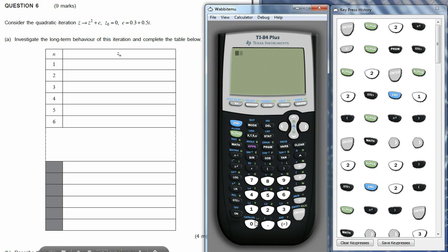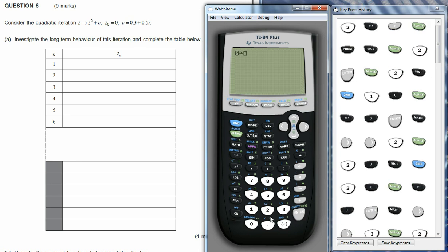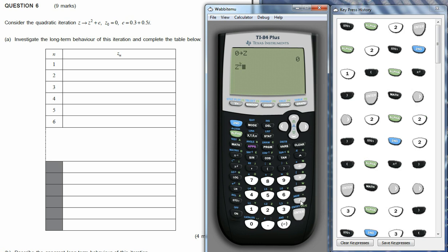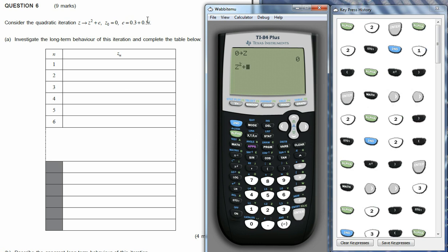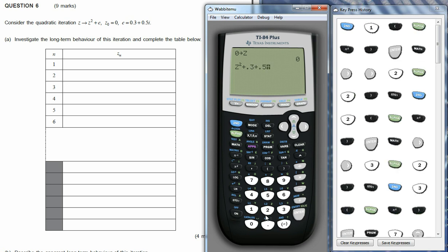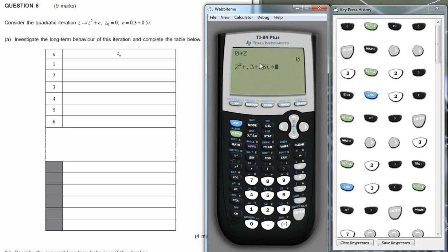So to begin with, what we're going to do is we're going to initialize a variable z, so we're going to store the value 0 in this variable z, and then what I'm going to do is I'm going to then perform this first step of the iteration. So to do that, we go z squared plus this value c, so 0.3 plus 0.5i. And I'm going to then store this updated value in the variable z.